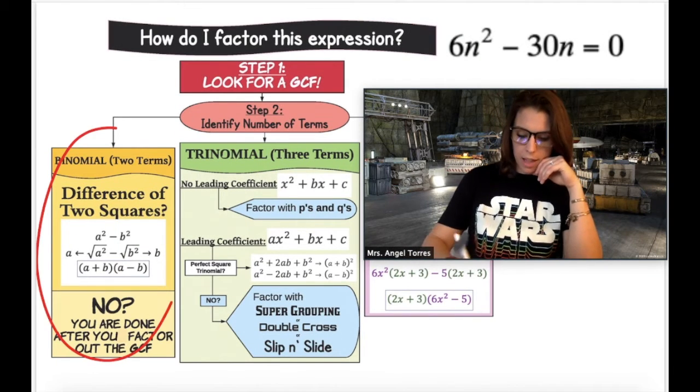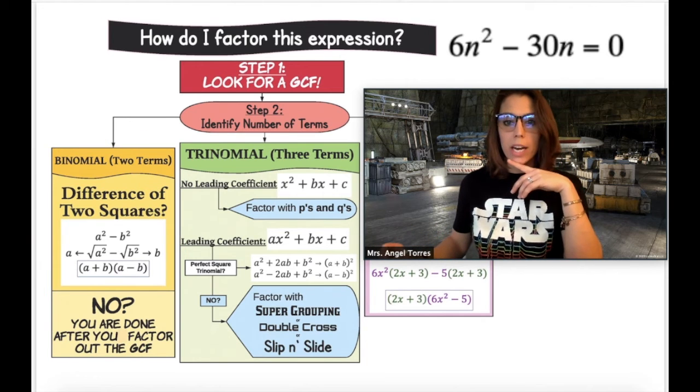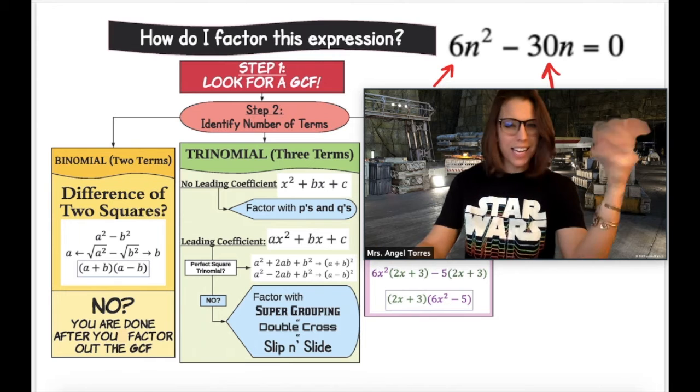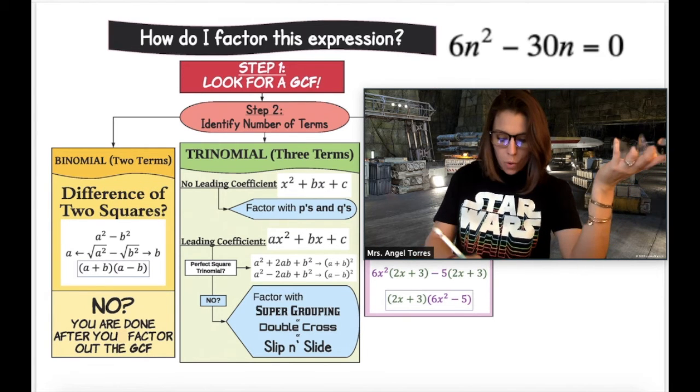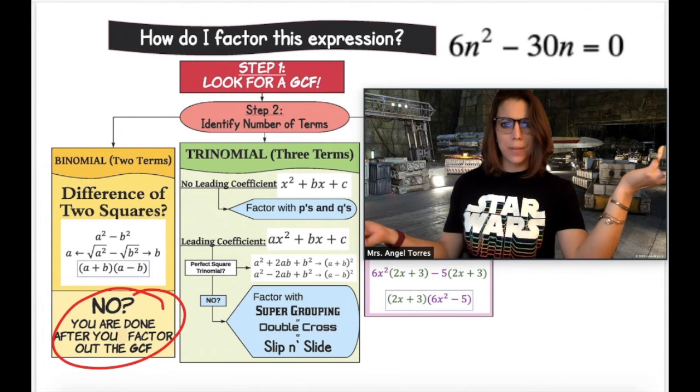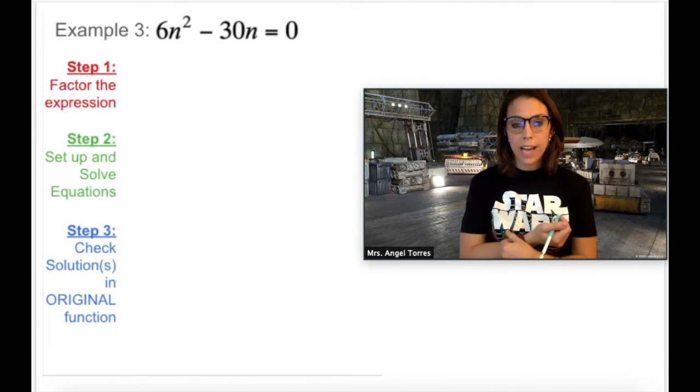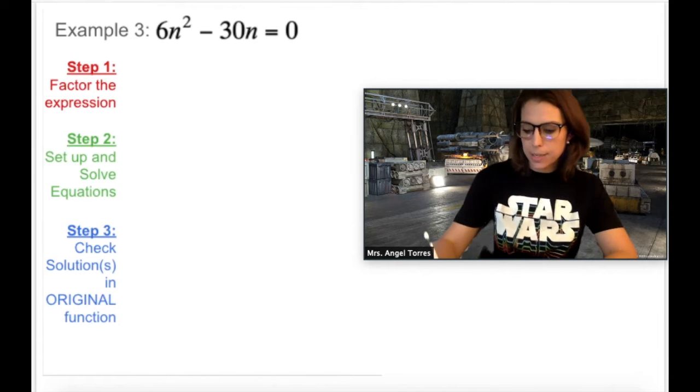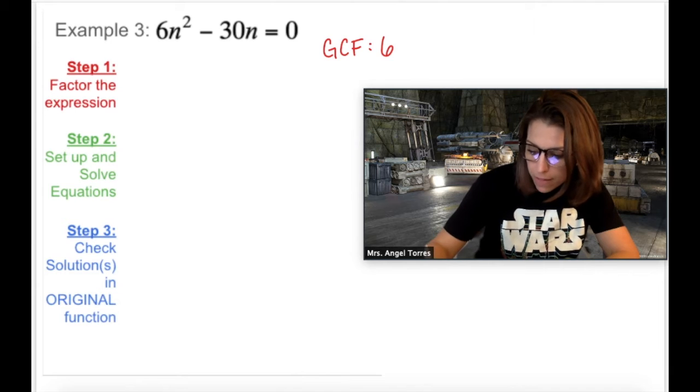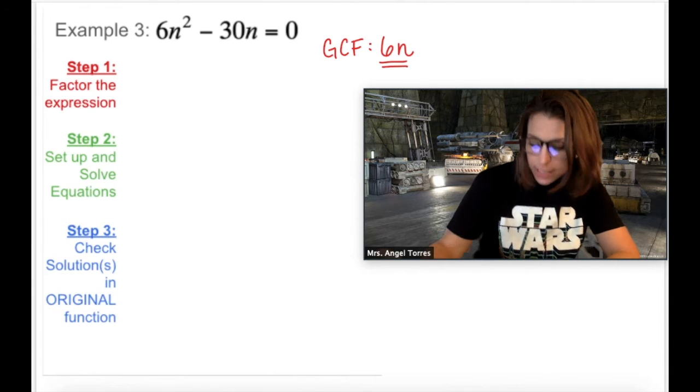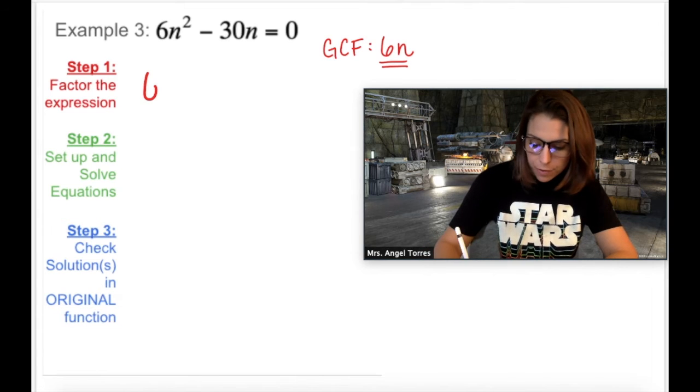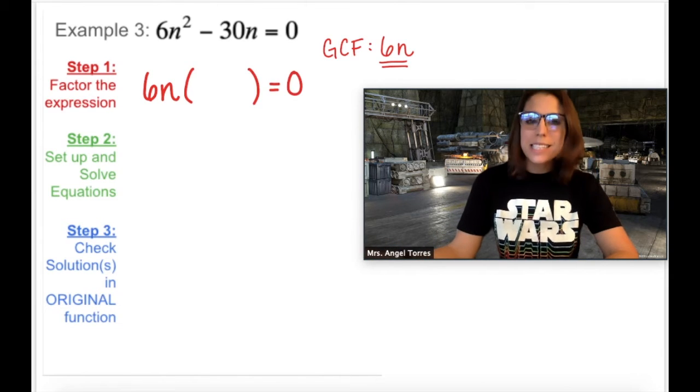Is this a difference of two squares? Well, it is a difference, but 6n squared is not a perfect square and neither is 30n. So that just means we're just going to factor out the GCF and then we're done. That seems simple enough. So here we go. What is the greatest common factor of 6n squared and 30n? Well, 6 goes into both 6 and 30 and both of them have at least one n in common, which means the GCF or the greatest common factor here is 6n. So 6n is the first factor in my new product, but what's left behind?